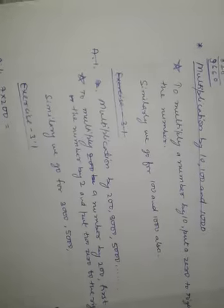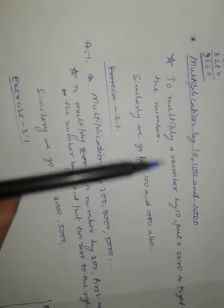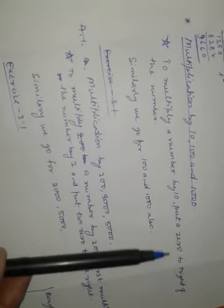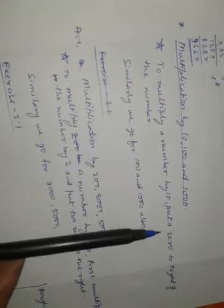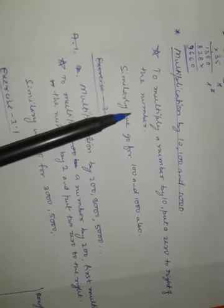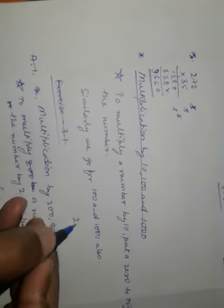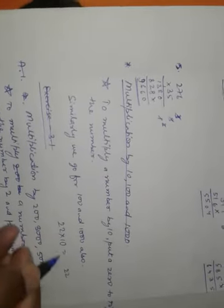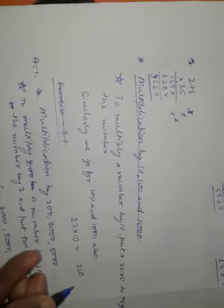Now we go further ahead, multiply by 10, 100, and 1000. So to do that we have to multiply a number by 10. So what we have to do, we have to put a zero to the right of the number. Whatever number we have to multiply, suppose we are multiplying 22 into 10. So you write that number as 22, and then we put 1 zero at the right side.